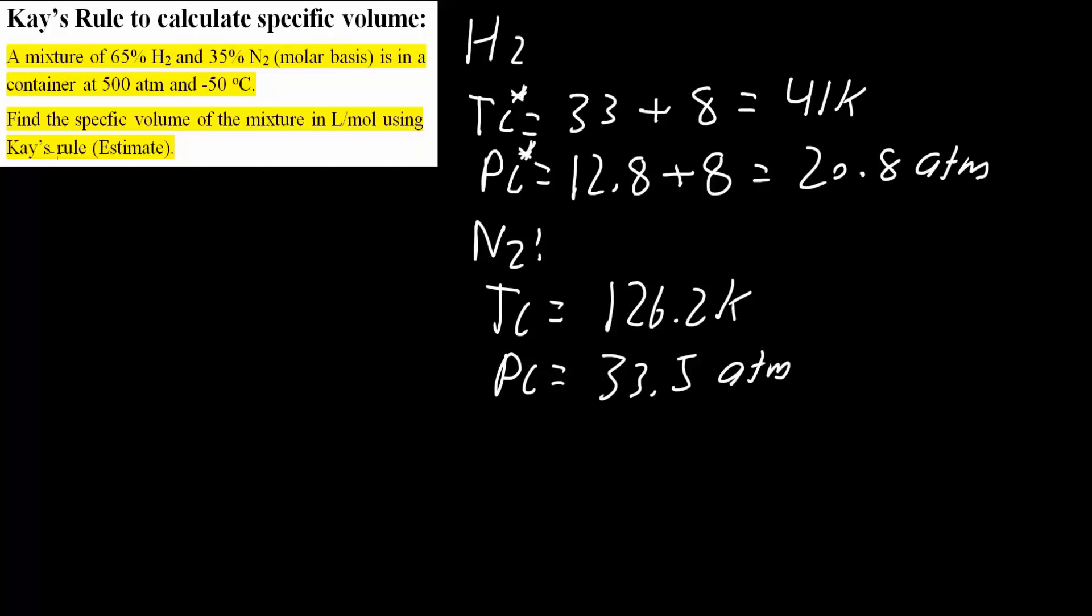Now, the thing about Kay's rule, we use this whenever we have a mixture. This is 65% hydrogen and this is 35% nitrogen. So, we need to calculate the pseudo-critical constant, meaning where we consider the actual mixture.